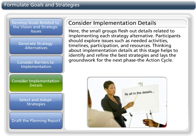Small groups flesh out details related to implementing each strategy alternative. Participants should explore issues such as needed activities, timelines, participation, and resources. Thinking about implementation details at this stage helps to identify and refine the best strategies and lays the groundwork for the next phase, the action cycle.